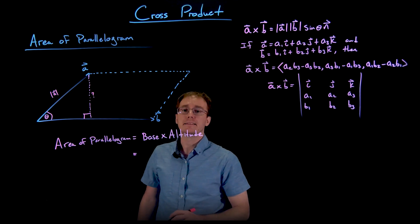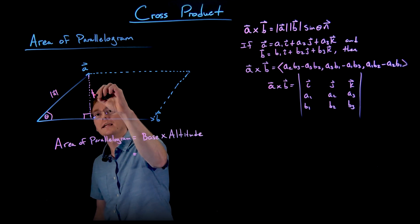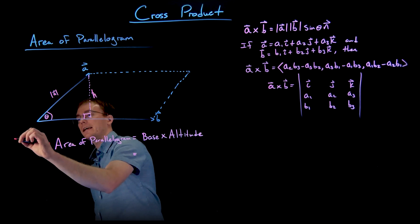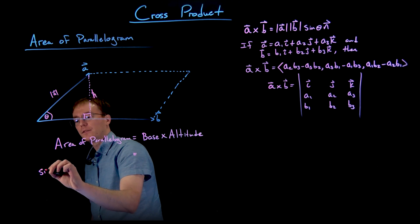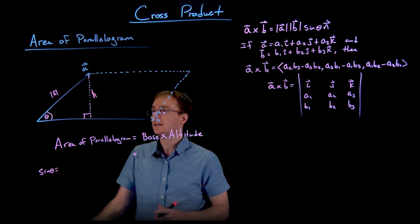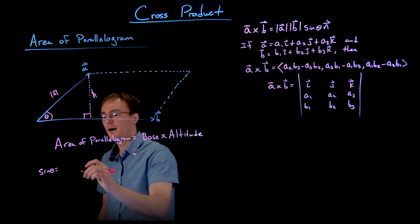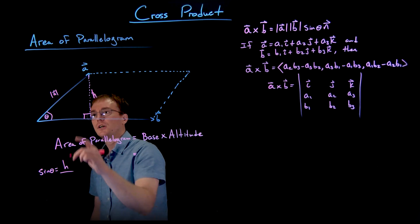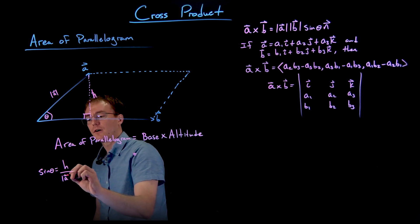So for now that height is maybe unknown, or we can call it H, and what we know is if we take sine of our angle theta using right triangle trigonometry or SOHCAHTOA, sine is opposite over hypotenuse, so that'll give us H over the magnitude of our vector A.